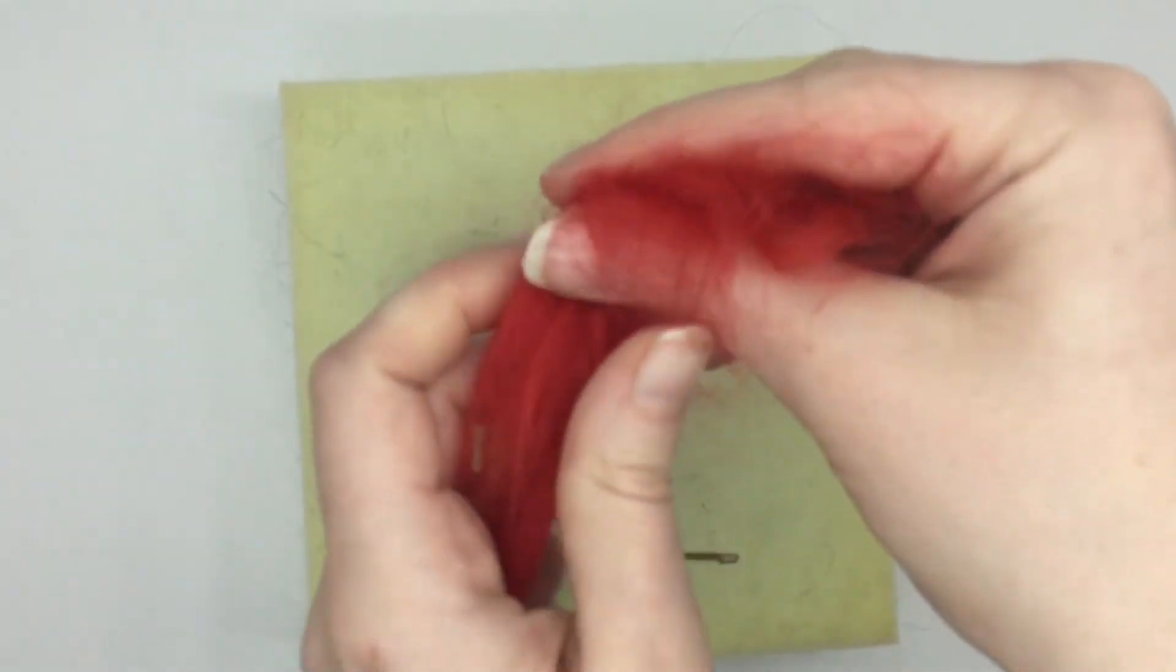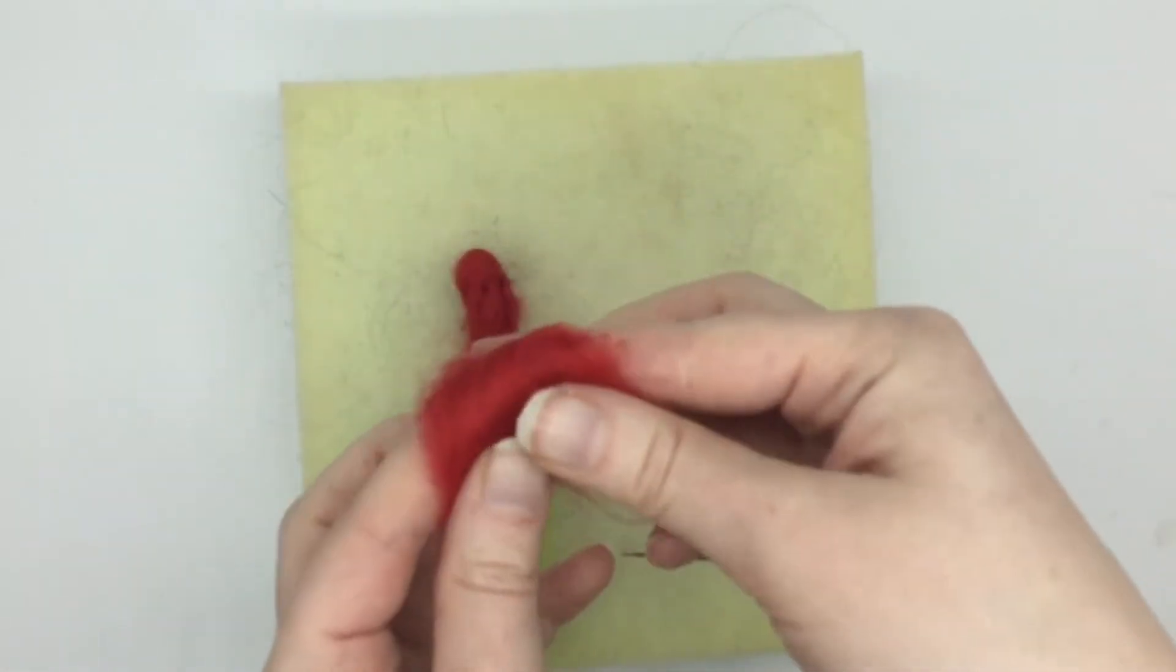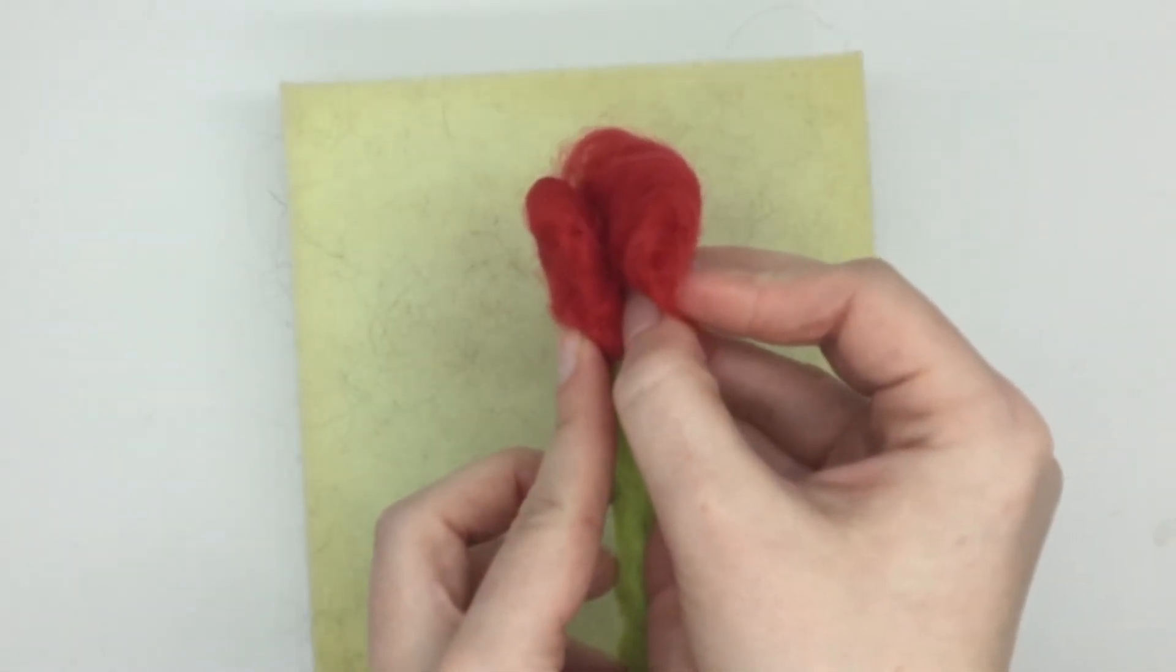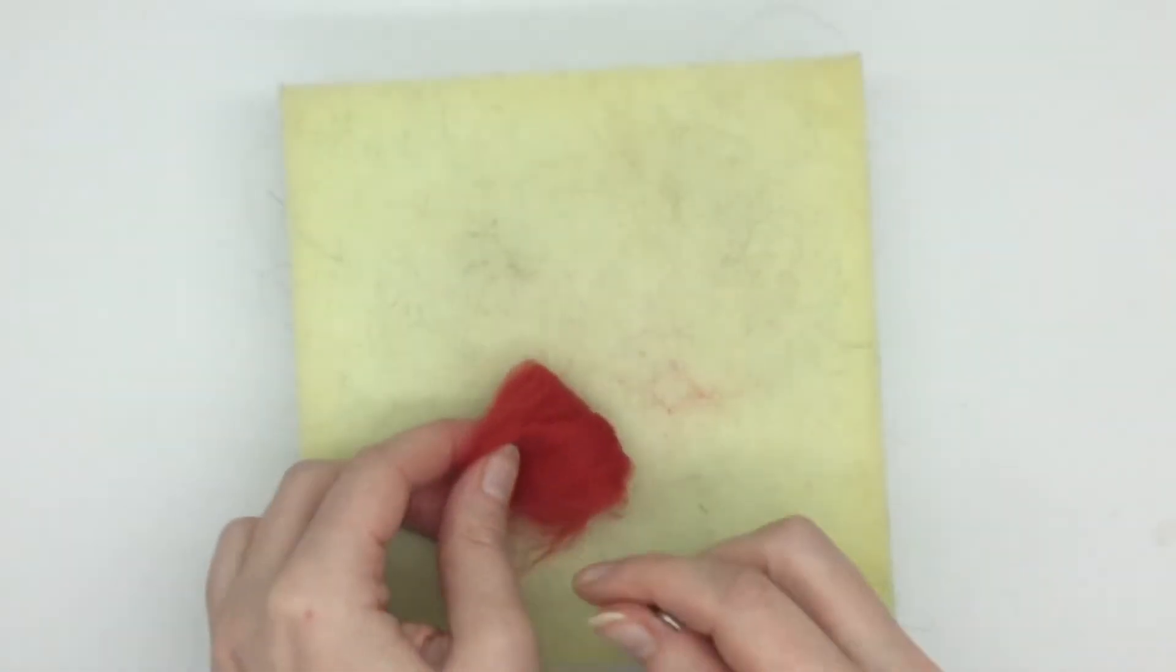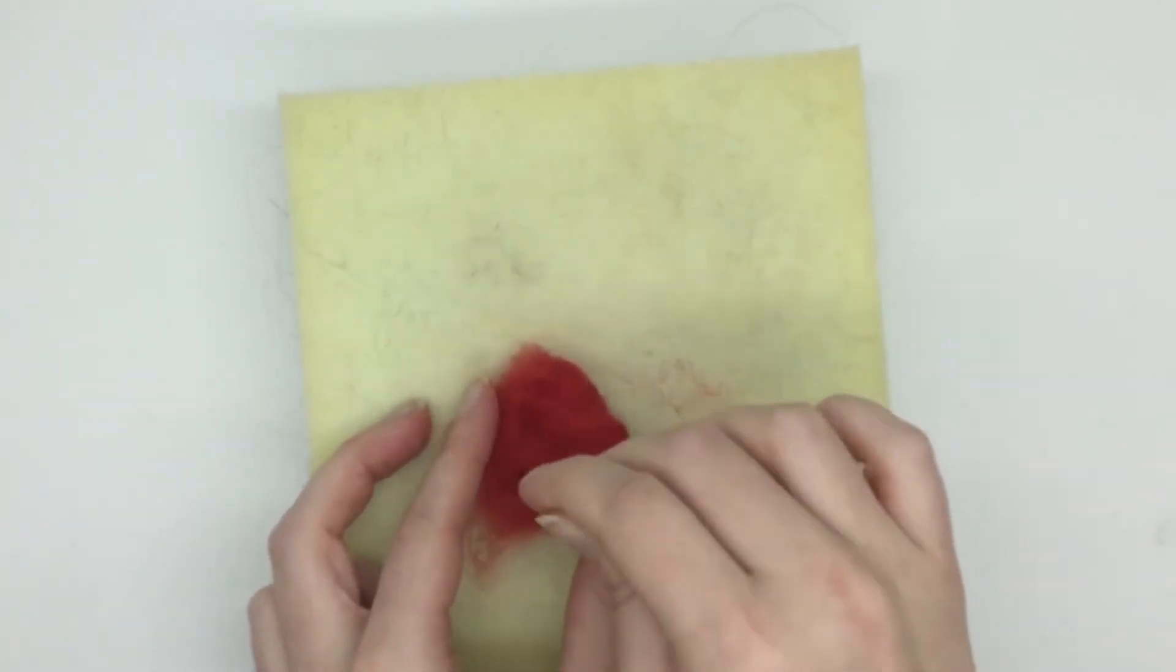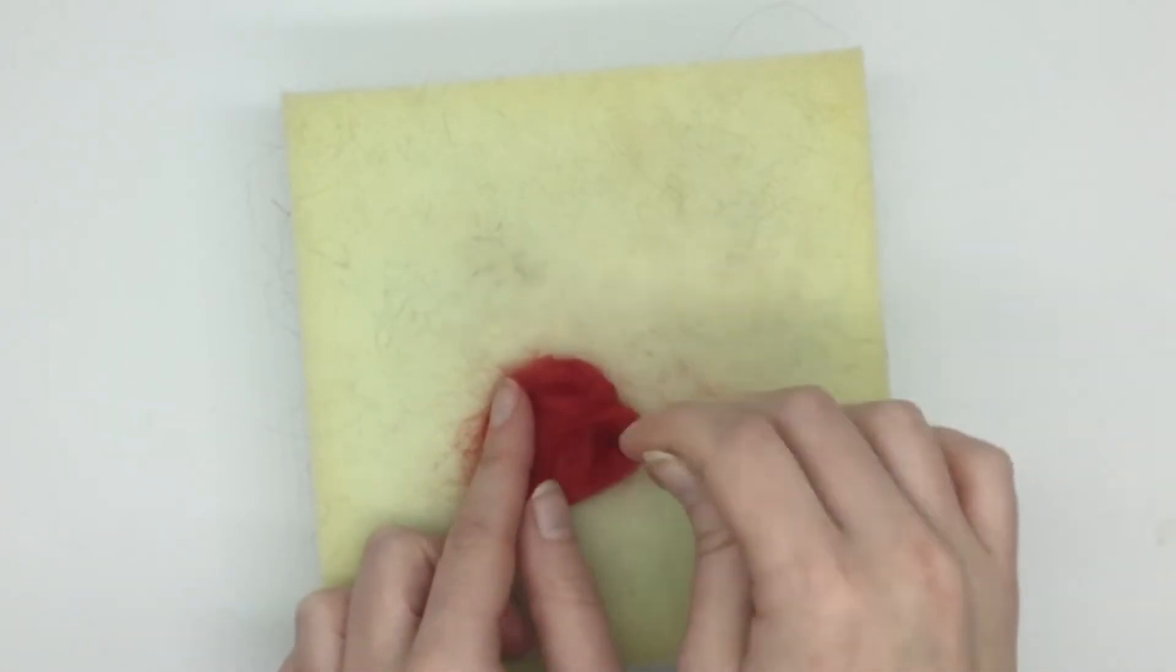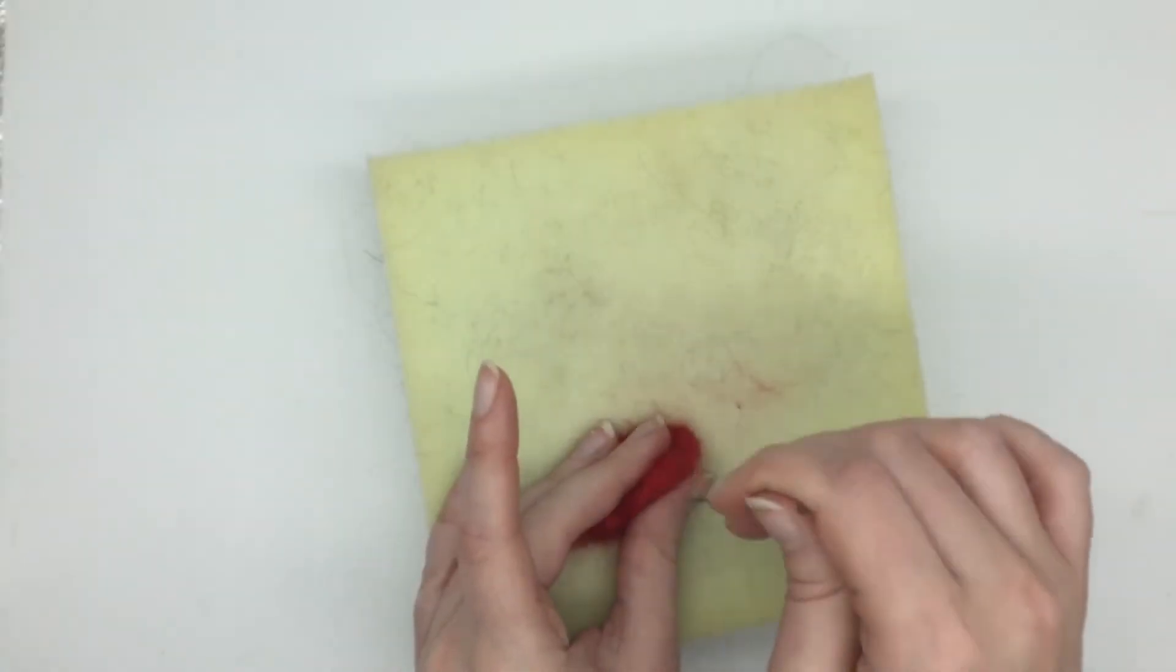Now we're going to start felting the petals. I'm just going to fold some of my red wool into a petal shape, and that is the right size. It's good to judge it by holding it up against the bud of the rose. Then once that's done, just felt that so it holds its shape, but leave the fibers loose on the bottom part of the petal as this is how we are going to attach it to the bud of the rose.